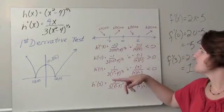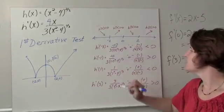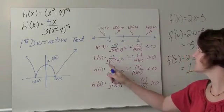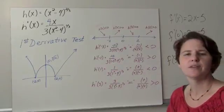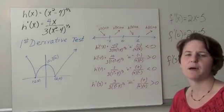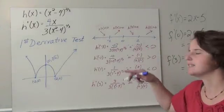Between negative 2 and 0, I'll plug in negative 1. The numerator is negative 4. The denominator has a positive factor and a negative factor. So we have a negative divided by a negative, which is positive, which means we're increasing.